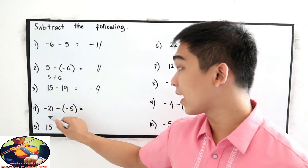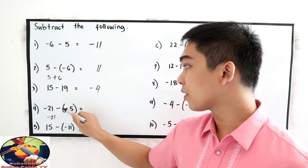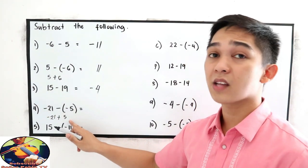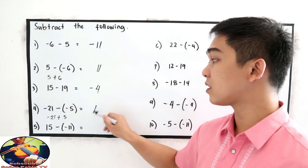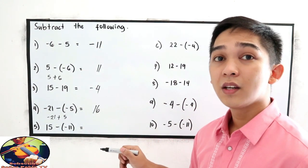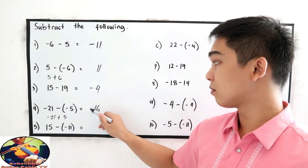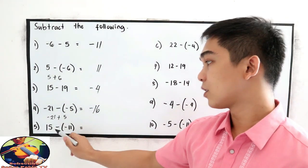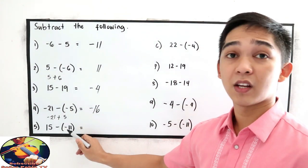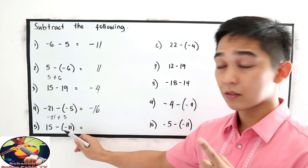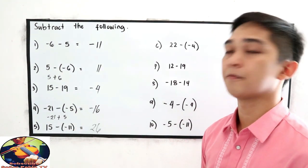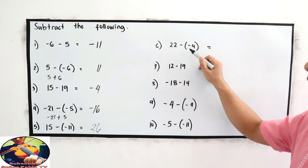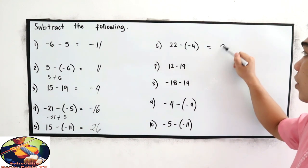Using the shortcut for number 4 — negative 21: negative times negative is positive 5, so that is negative 21 plus 5. Unlike signs — subtract: 21 minus 5 is 16. Copy the sign of the greater absolute value — 21 is greater, so the answer is negative 16. For number 5: 15 plus 11 — because negative times negative is positive — so 15 plus 11 is 26. Number 6: 22 — negative times negative is positive 4 — so 22 plus 4 is 26.